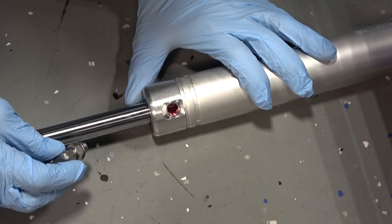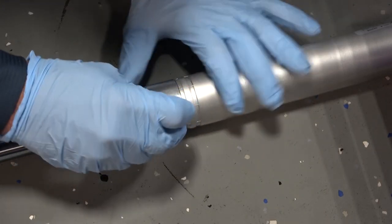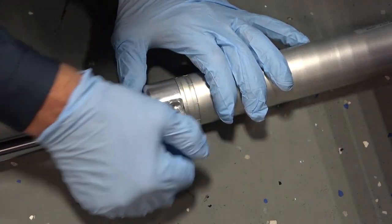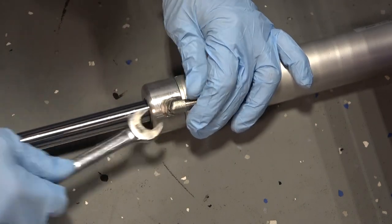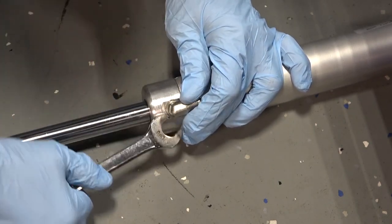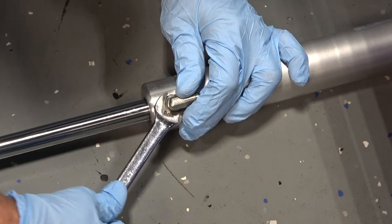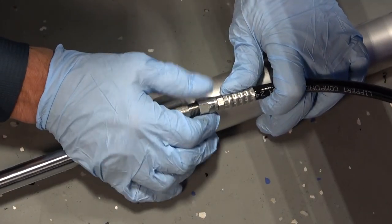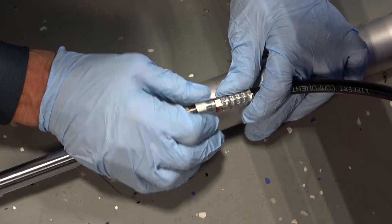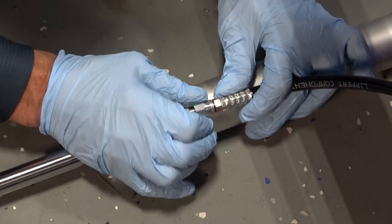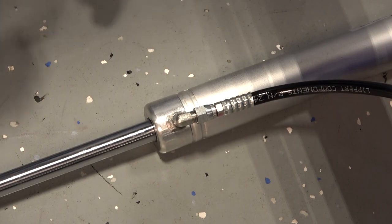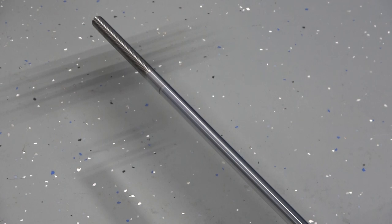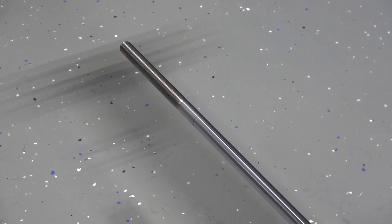Attach the retract fitting to the new cylinder and tighten it down. Then connect your retract hose to the fitting on the new cylinder. Now that our fittings and hoses have been switched over, retract the new cylinder to make it easier to install.